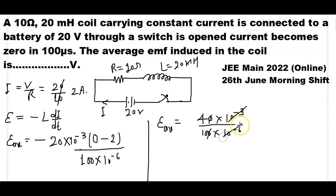10 to the power minus 3 cancels. Then here remains 10 to the power minus 3. And 4 into 10 divided, so divided becomes 0.4.